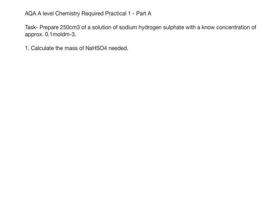AQA A-level chemistry required practical one, part A. Task: prepare 250cm³ of a solution of sodium hydrogen sulfate with a known concentration of approximately 0.1 mol/dm³. We need to start by calculating the mass of sodium hydrogen sulfate needed.